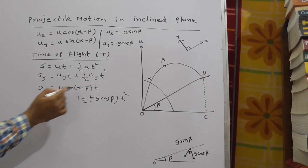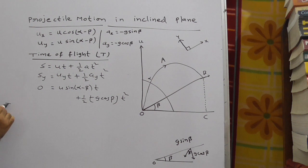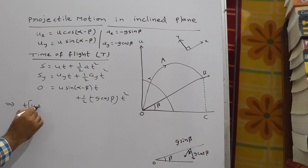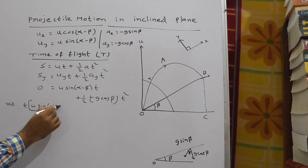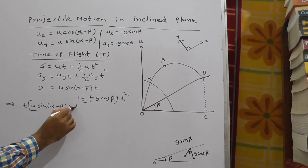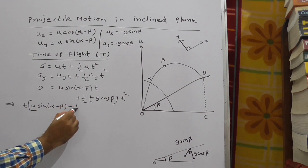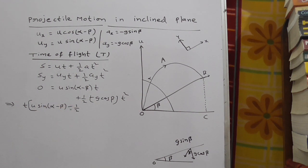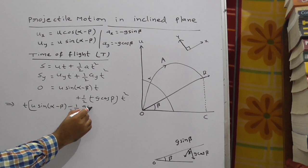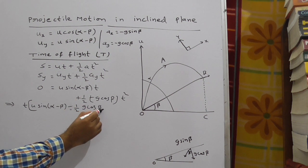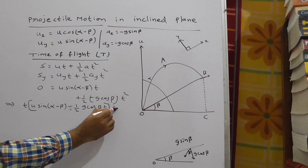From this state t come up. I am rewriting the equation as t of u sin(alpha minus beta) plus half minus, minus 1 by 2 g cos beta t is equal to 0.